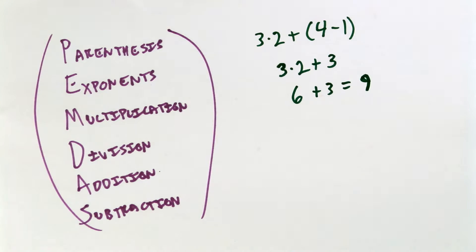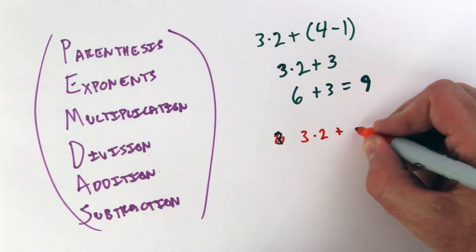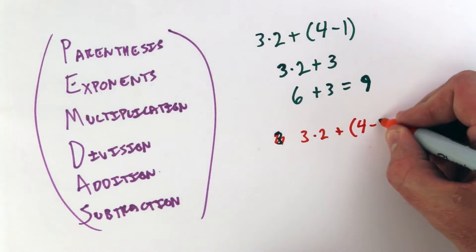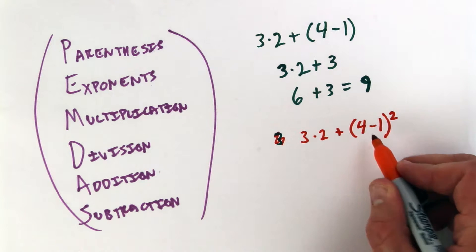Let's use that same problem, make it a little more complicated. Say 3 times 2 plus 4 minus 1 squared. So now we have an exponent in there, but we still do what's in the parentheses first.